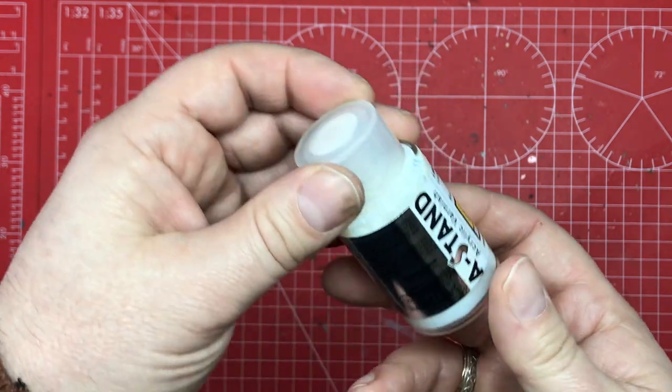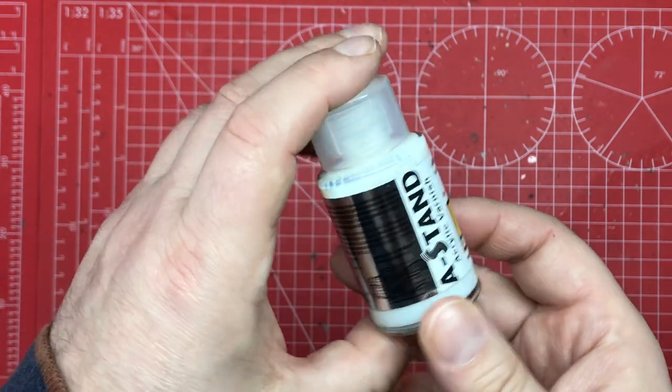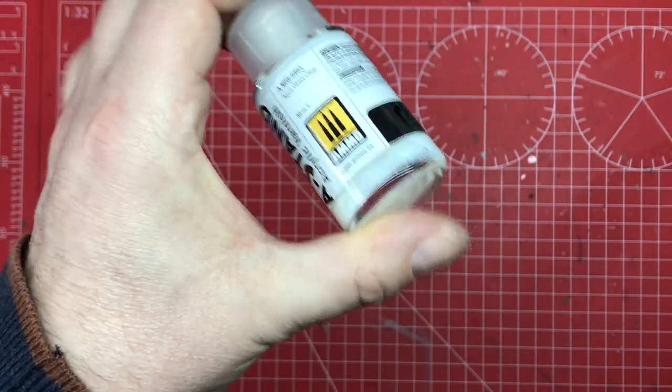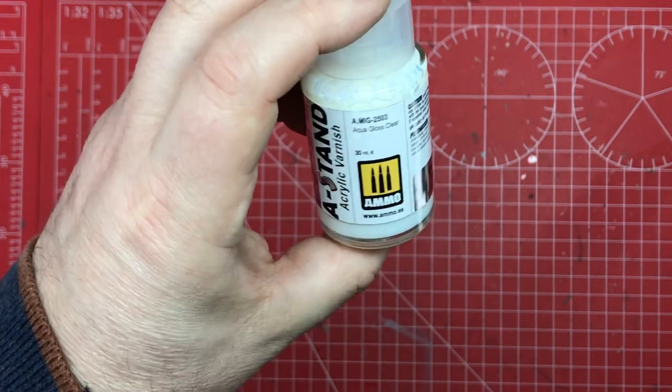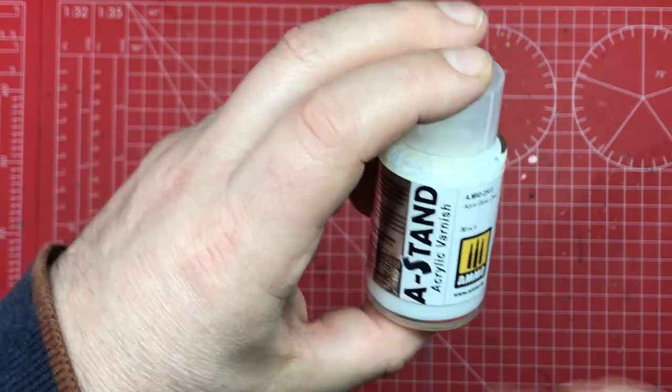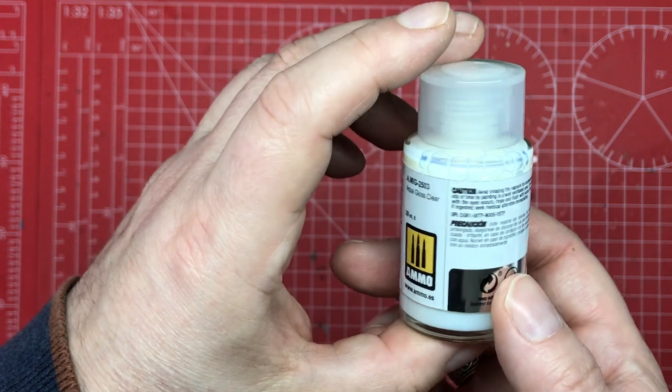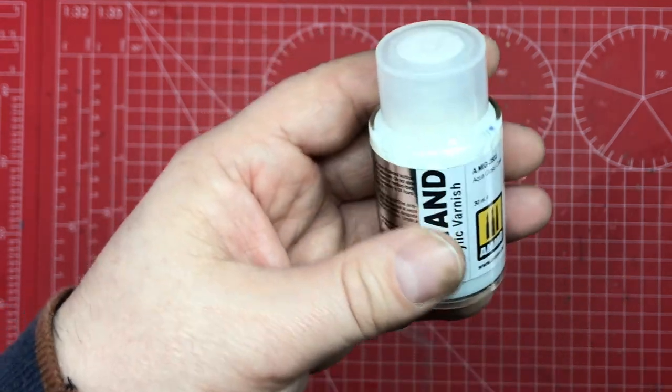drop it into your airbrush and away you go. Now I've not tried using a paintbrush with this, but it's fairly thin so there's no reason why you wouldn't be able to use a paintbrush for small areas and what have you. But I put it through my airbrush.